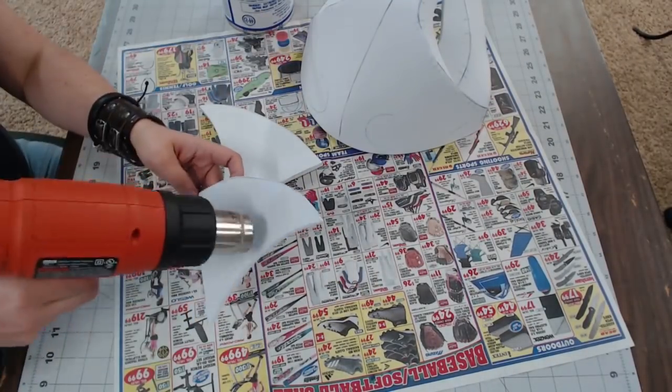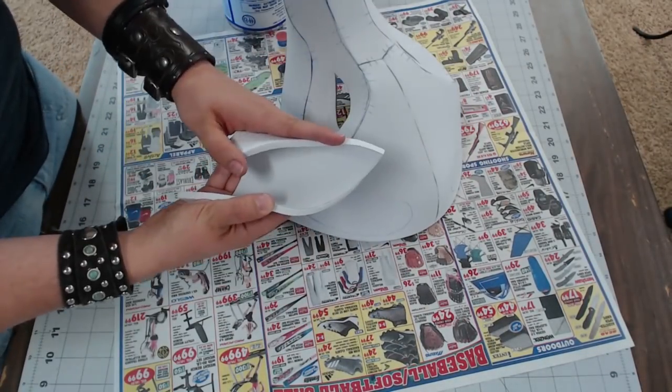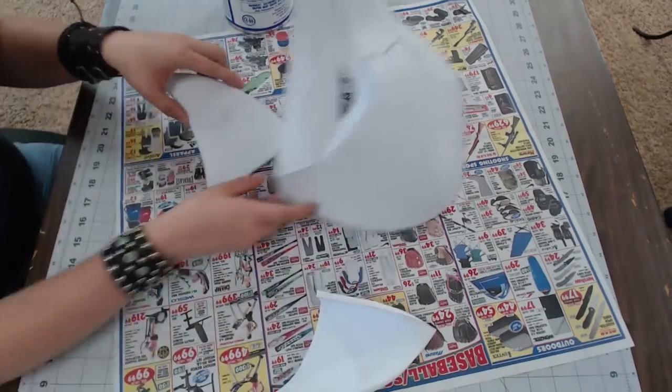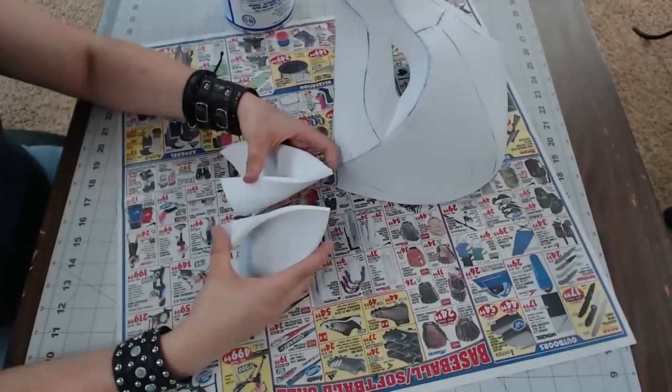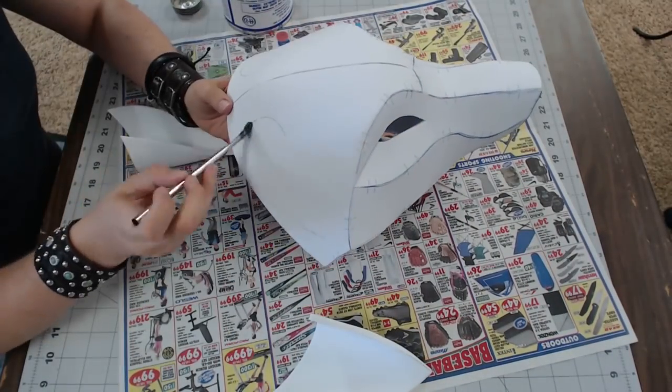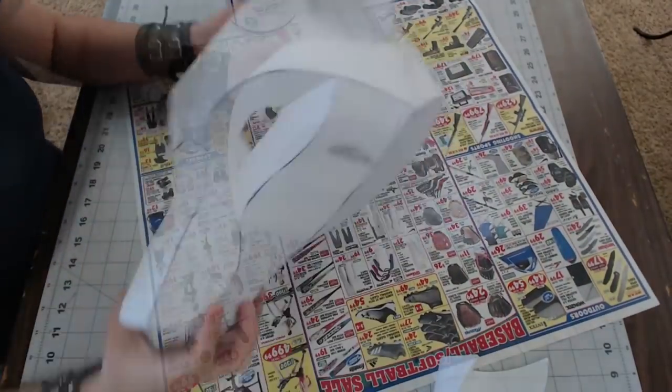It's time for the ears. Use your heat gun to heat up the foam and then hold it into a curved shape. Then just apply the glue along the ear curve line and you will have ears and a finished mask.